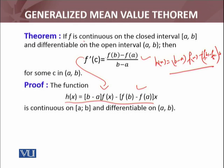Now h(x) is a function which is of course continuous on the closed interval, because b and a are real numbers, f(x) is continuous, this is a linear function. f(b) and f(a) are particular real numbers, and x is a linear function which is also continuous on the closed interval [a, b]. Furthermore, it is differentiable, because f is differentiable and the linear function is also differentiable on the open interval.